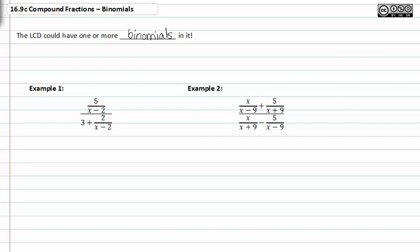In example one, we see that there's a binomial in the numerator's denominator, as well as the denominator's denominator. It gets a little tricky to explain, but your LCD is actually quite simple—it's just x minus two.